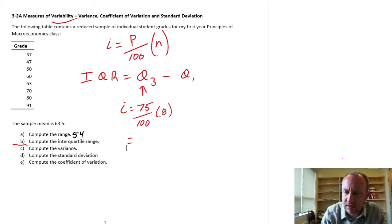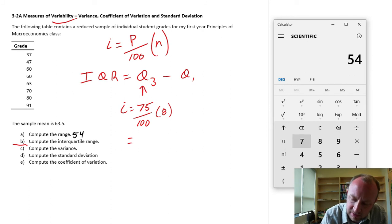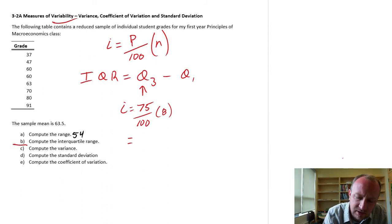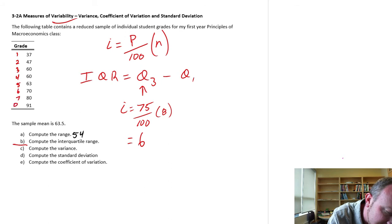So just to be thorough, if we put this into our calculator, this is 75 divided by 100 times 8, so this gives us a value of 6. So my 6th observation, let me just add some index values: 1, 2, 3, 4, 5, 6, 7, and 8. So the 70 is my 6th.